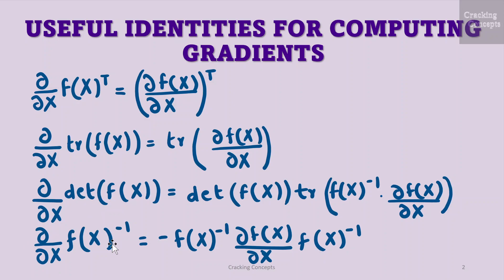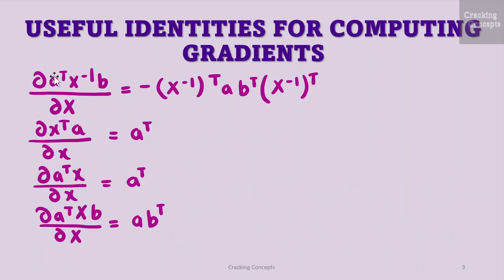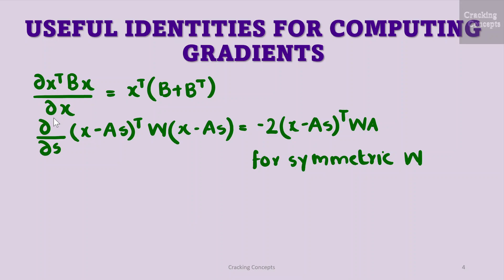d by dx of f inverse can be written as minus f inverse d of f of x by dx into f inverse. d of a transpose x inverse b by dx can be written as minus x inverse transpose a into b transpose x inverse transpose. d of x transpose a by dx can be written as a transpose. d of a transpose x b by dx can be written as a b transpose. d of x transpose bx by dx can be written as x transpose b plus b transpose. d of a transpose x minus a s the whole transpose into w into x minus a s can be written as minus 2 into x minus a s transpose w into a, for any symmetric w.